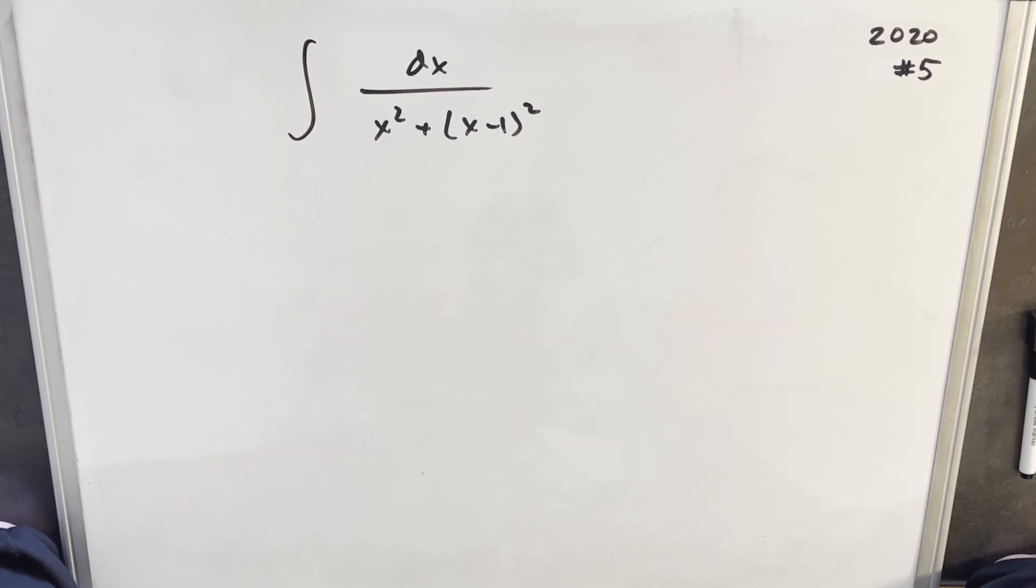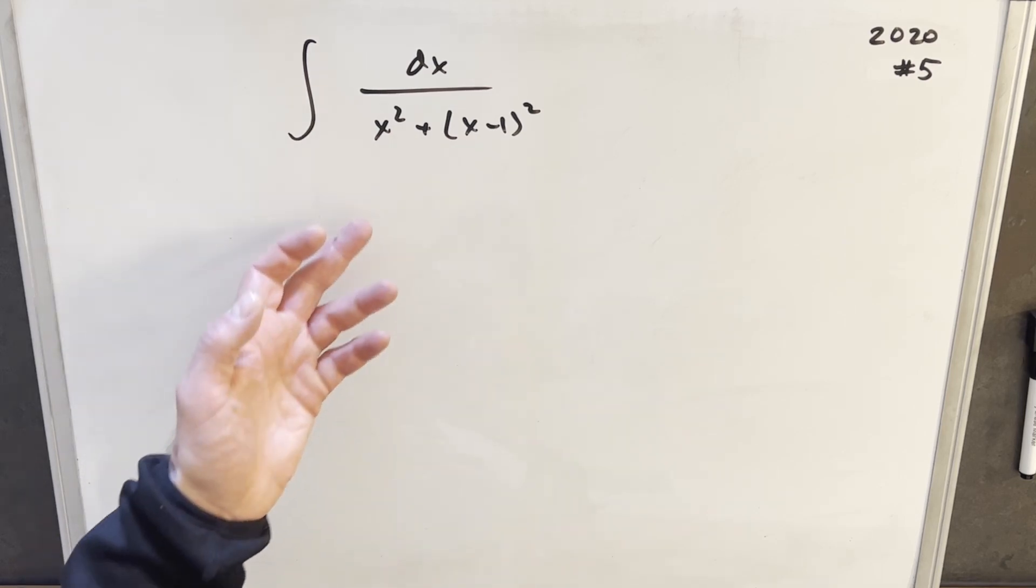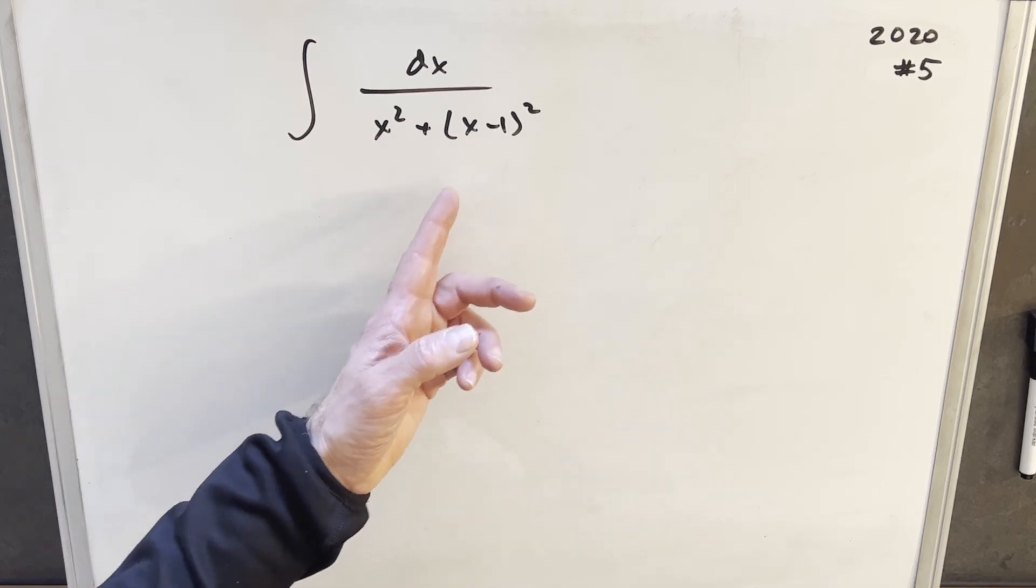We have the integral of dx over x squared plus x minus one squared. It's a little unusual looking the way it's set up here, it's not really a polynomial. I mean, it's a polynomial when we distribute it out, but it's not set up that way.